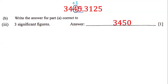We take this 4, add one to get 5, and turn the 5 behind it into a zero. The numbers behind the decimal point are eliminated, so our answer is 3,450. That is the answer to three significant figures: 3,450.